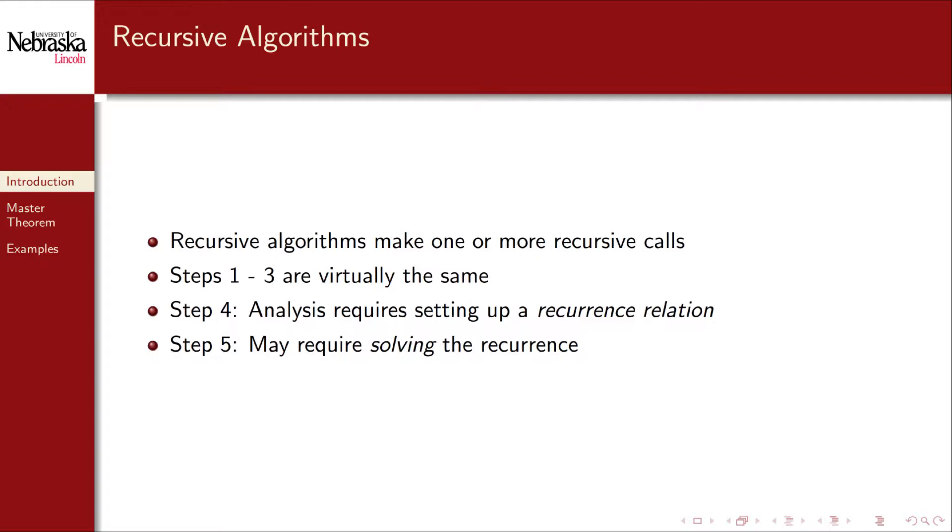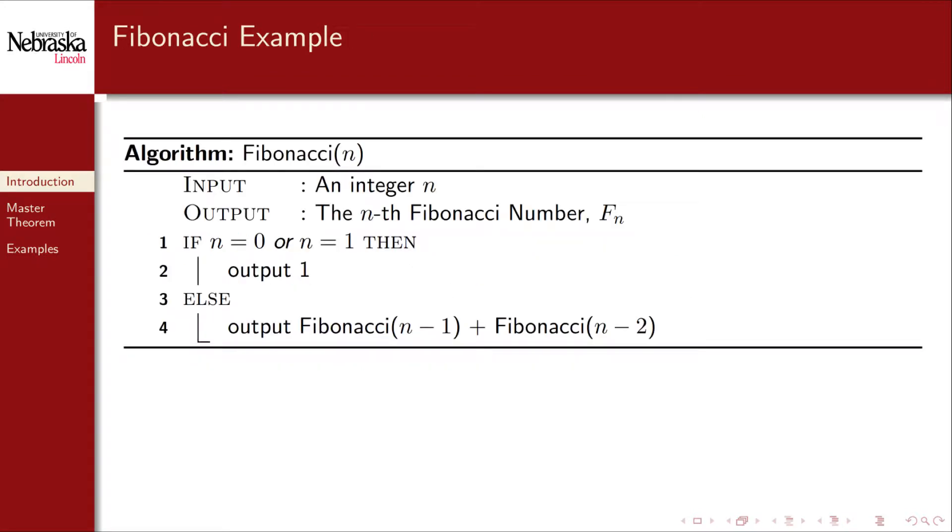To get an asymptotic characterization of that recurrence relation, you need to solve the recurrence to get a closed-form solution. To illustrate this idea, consider the classic example of computing the Fibonacci sequence. The nth Fibonacci number can be computed recursively using the following pseudocode. In general, the nth Fibonacci number is the sum of the two previous numbers in the sequence. The sequence starts with values one and one, giving us the base cases here.